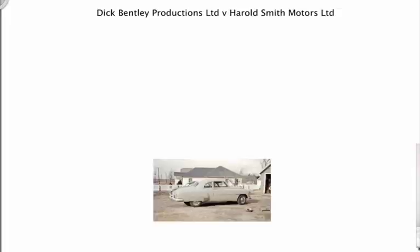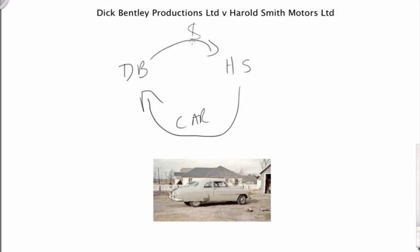To better understand this, let's look at a couple of cases. The first is Dick Bentley Productions and Harold Smith Motors. As with a lot of contract cases, it involves a deal for a car. Harold Smith Motors is selling a car to Dick Bentley Productions. As part of the deal, Harold Smith Motors makes a statement saying the car had only been driven 20,000 miles. That statement was actually untrue, but Harold Smith made it believing it was true — so there wasn't a misrepresentation — but in fact the car had been driven a hundred thousand miles.